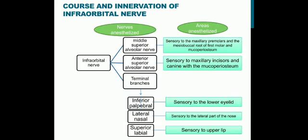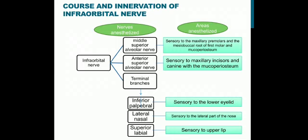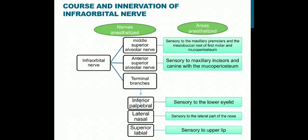The nerves anesthetized are the ipsilateral middle superior alveolar nerve, anterior superior alveolar nerve, and its terminal branches: the inferior palpebral, lateral nasal, and superior labial nerves. The middle superior alveolar nerve anesthetizes the maxillary premolars and the mesiobuccal root of the first molar and the mucoperiosteum. The anterior superior alveolar nerve anesthetizes the maxillary incisors and canines with the mucoperiosteum. The terminal branches anesthetize the area of the lower eyelid, lateral part of the nose, and the upper lip.